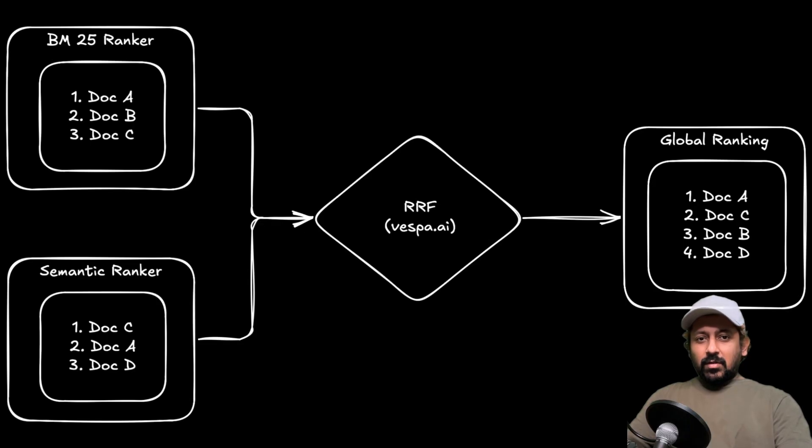In the previous video we have seen that we used a ranker called BM25 and we used another one, semantic ranker, and we combined them using reciprocal rank fusion inside Vespa AI infrastructure. And in the end it gave us some kind of global ranking.